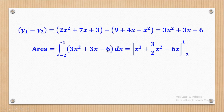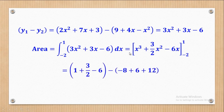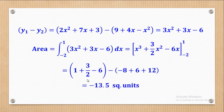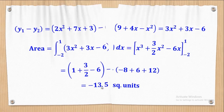We integrate the difference between the two curves from negative 2 to 1. Integrating negative 3x-squared plus 3x plus 6 gives negative x-cubed plus 3 over 2 x-squared plus 6x. Substituting the upper limit of 1 and the lower limit of negative 2 and simplifying gives the area as negative 13.5.